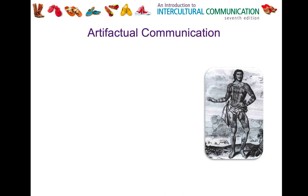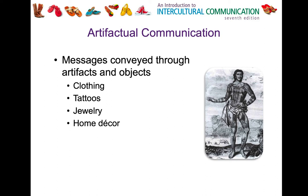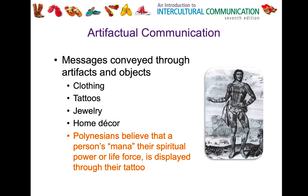Artifacts can also communicate meaning. An artifact is an object — clothing, jewelry, or the way you decorate your house or body. Tattoos are one example: in Polynesian cultures, it is believed that a person's mana — their spiritual power or life force — is displayed through tattooing. Tattoos are placed around the body during specific events in that person's life, and where they are placed and what they depict holds specific meaning and tells a story. Tattooing is a large part of traditional Polynesian culture.